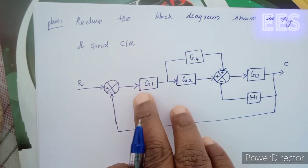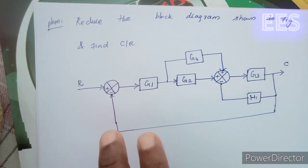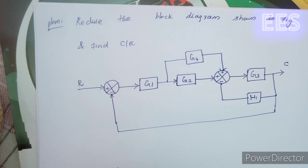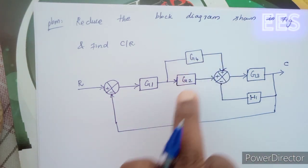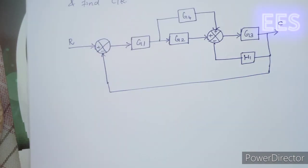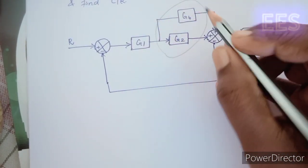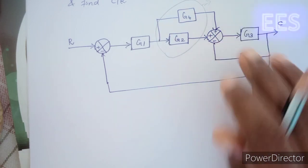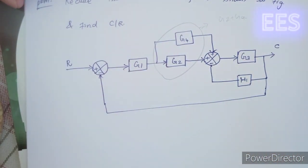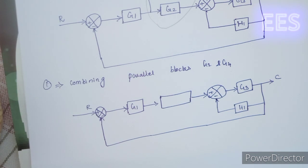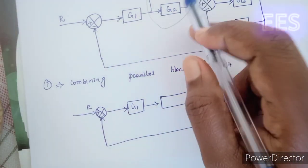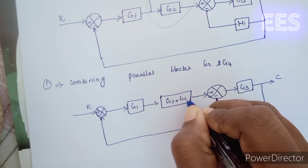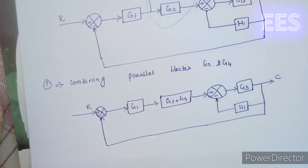In block diagram reduction, if we want to reduce the diagram we need to be careful not to make mistakes. We have to identify which blocks are parallel. G2 and G4 are in parallel, so we will add G2 and G4 to combine them into one block.